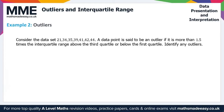Example 2 looks at outliers. We've been given a dataset that is already in order, so we can work straight away. A data point is an outlier if it is more than 1.5 times the IQR above the third quartile or below the first quartile. We need to identify any outliers, so first let's calculate Q1 and Q3.